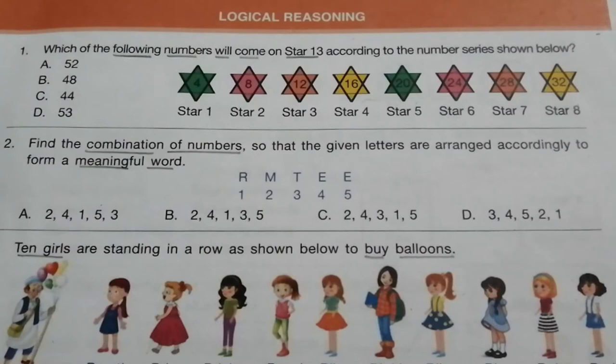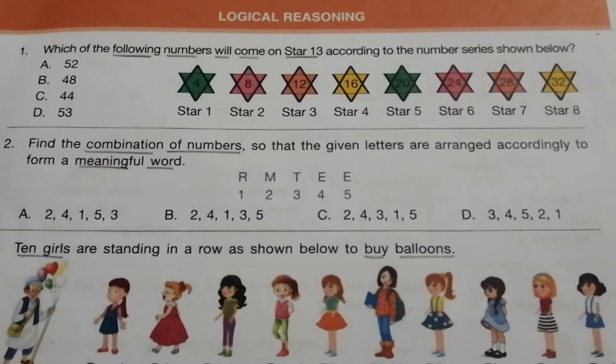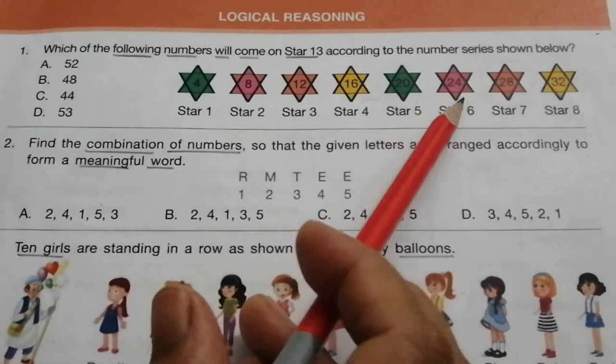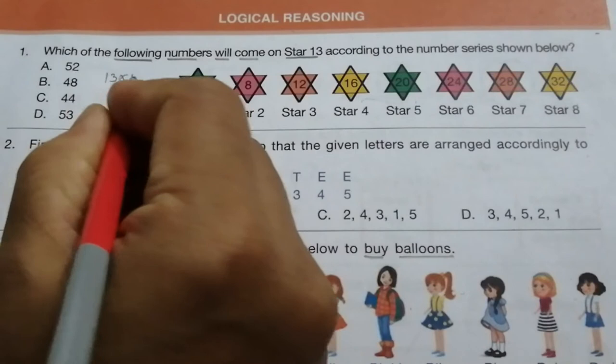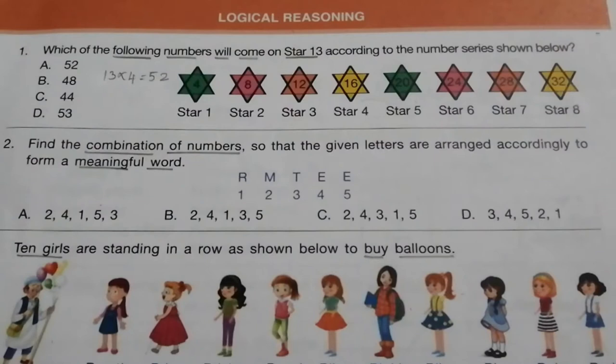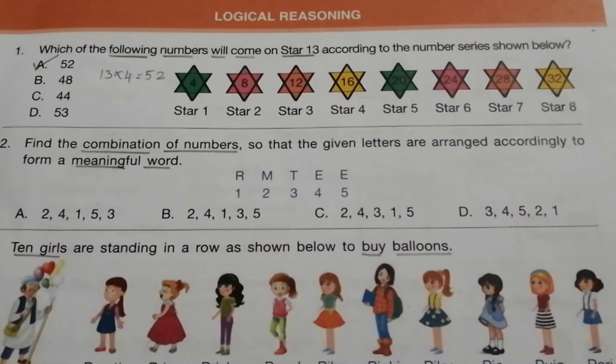Question 1: Which of the following numbers will come on the star 13 according to the number series shown below? The numbers are 4, 8, 12, 16, 20, 24, 28, 32 — this is the 4 times table. So star 13 means 13 into 4, which is 52. The answer is A: 52.